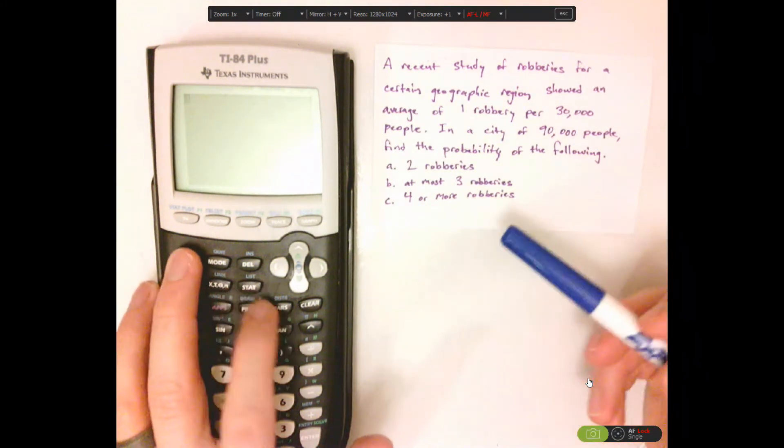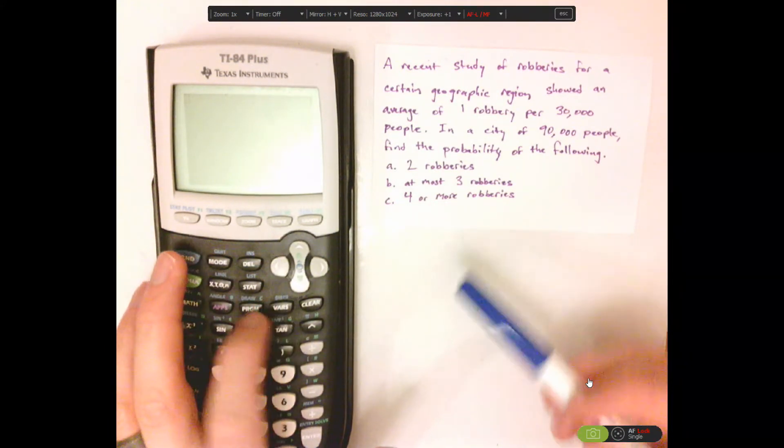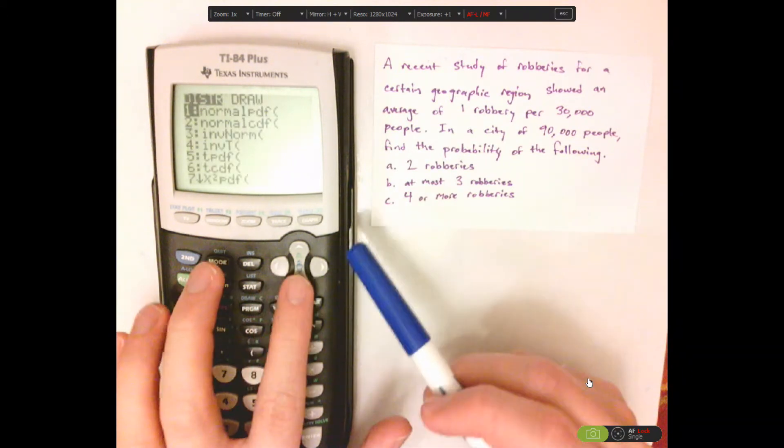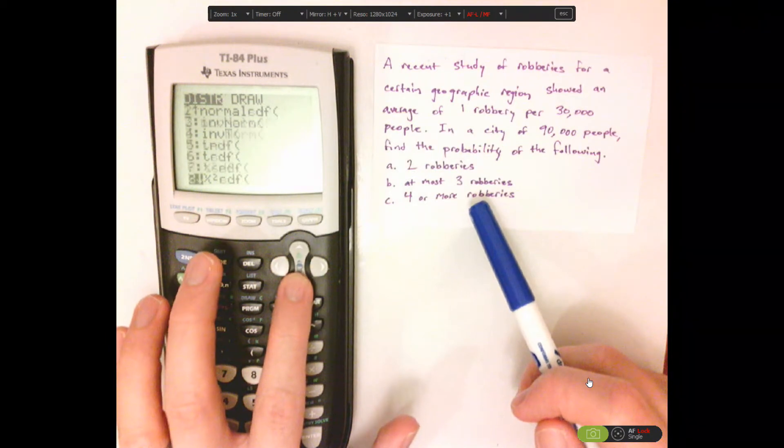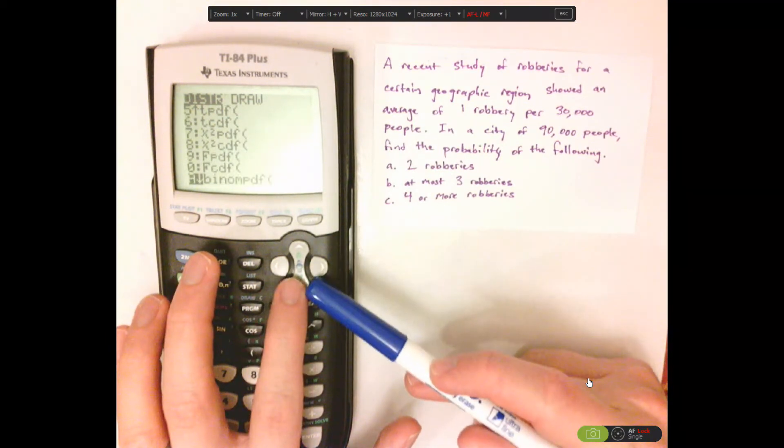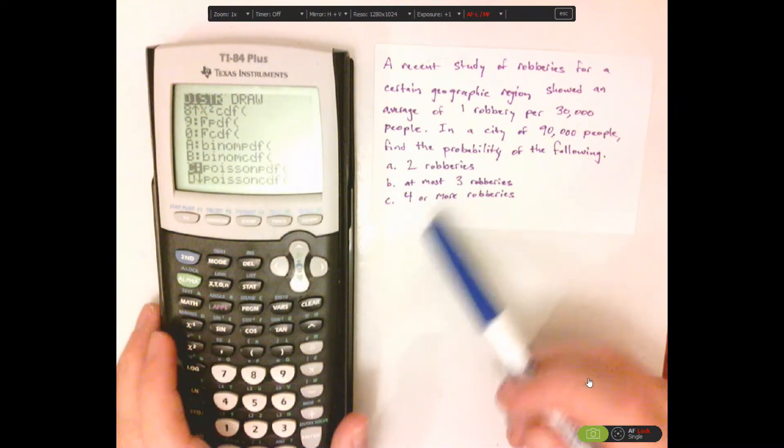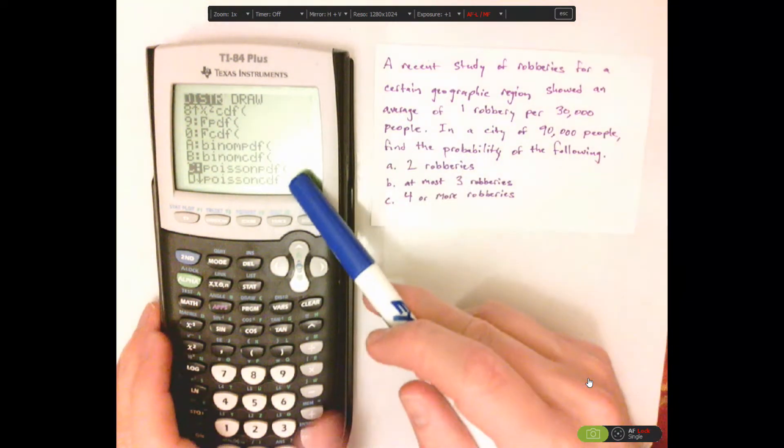So this is a distribution, so push second, and then the VARS button, that's going to give you distributions. Now, we're going to use a Poisson distribution. So, click the arrows down. Alright, there it is. We're looking for an individual probability, so we're going to use a PDF.